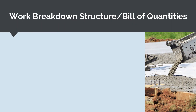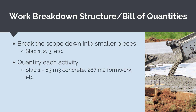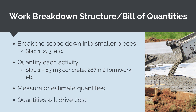The first step is to prepare our work breakdown structure and bill of quantities. We want to break the project scope down into component pieces. For example, if the scope we are pricing has several different concrete slabs, we could break the scope down into slab one, two, and three. Next, we measure or estimate all of the key quantities for each activity — for a concrete slab, that means cubic meters of concrete, meters squared of formwork, tons of steel reinforcement, and so on. It is important to get these quantities right because they ultimately drive our cost.